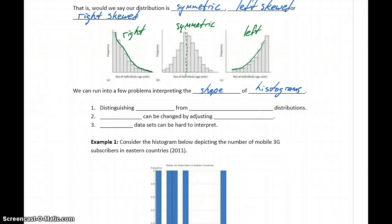And those include distinguishing skewed distributions from symmetric distributions. So up above, our three examples are all fairly straightforward. It's easy to see symmetric versus left skewed, right skewed.